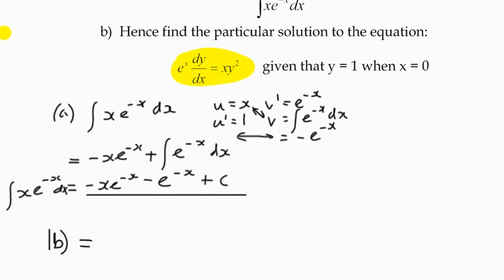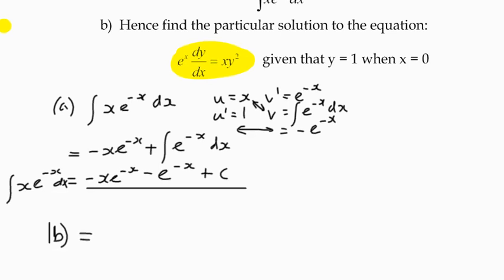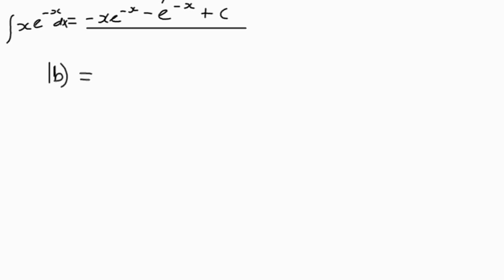which says, hence find a particular solution to the equation e to the x dy by dx equals xy squared. What do we do here? We're still on our separating variables, so we need to take the y term over to divide through by y squared. And then we've got x over e to the x dx.